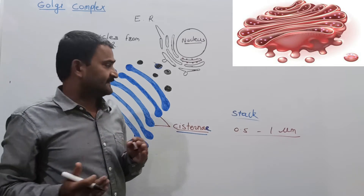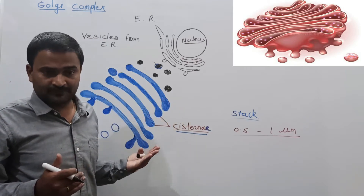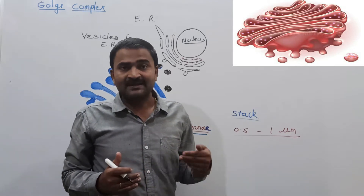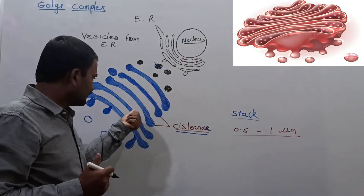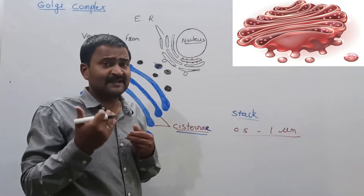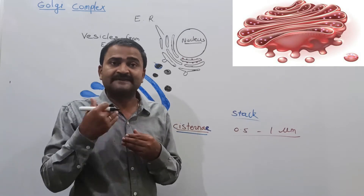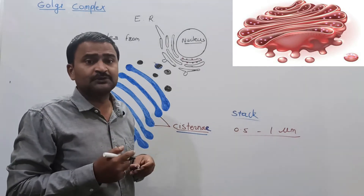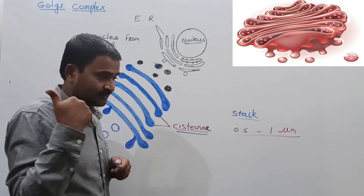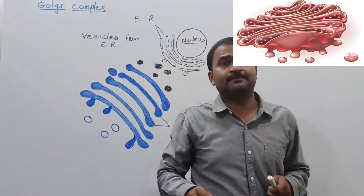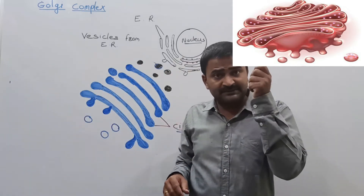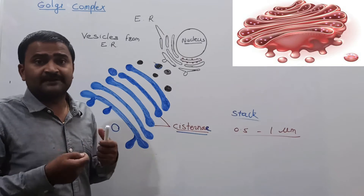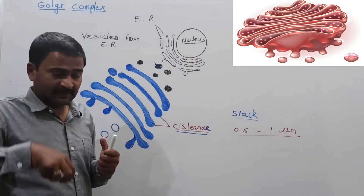The number of cisterni varies from cell to cell in the Golgi complex. Cells that are actively involved in secretion have a greater number of cisterni in the Golgi complex. Cells which are inactive or less active contain fewer cisterni in the Golgi apparatus. The number of cisterni in the Golgi apparatus depends upon the activity of the cell.